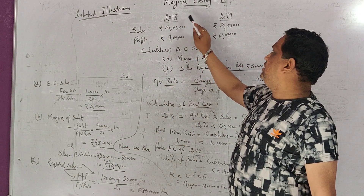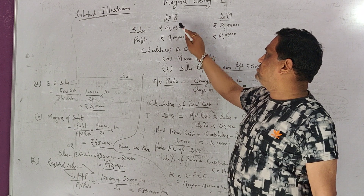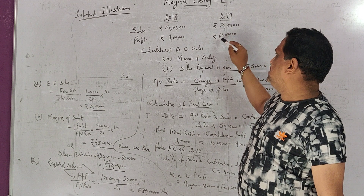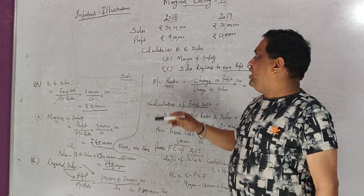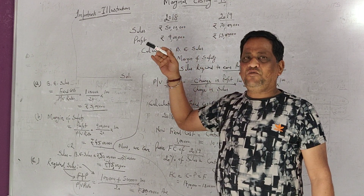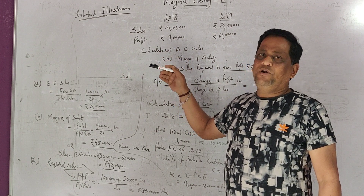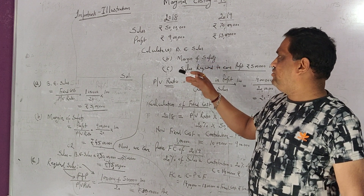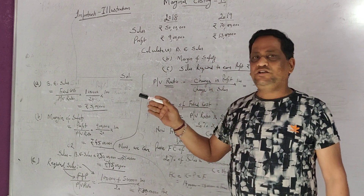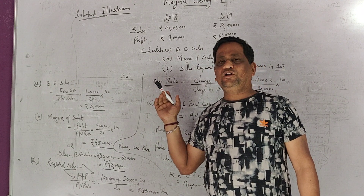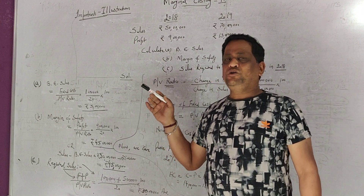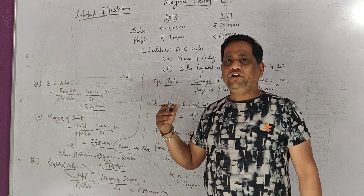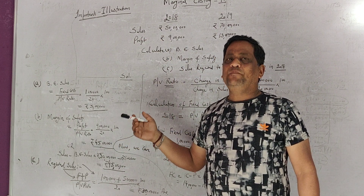We are given two period sales: 2018 sales and profits are given, and similarly 2019 sales and profits are given. In this problem we have to calculate margin of safety, break-even sales, and how much sale is required if a certain profit is required.